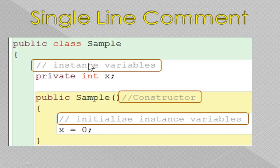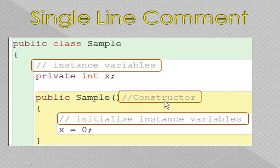Now we are going to see an example. Normally when you create a program, before starting your program you will have some default program. In that you will have some lines with double slash — that is called a single line comment line. You can see it has been highlighted. You can start as a separate line; you can see two comment lines have started as separate lines. Or you can continue from the statement — after the Java statement given there, you can continue with the comment line. This is how you can use single line comment.